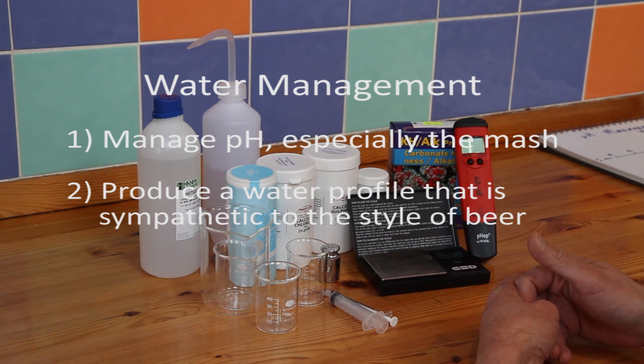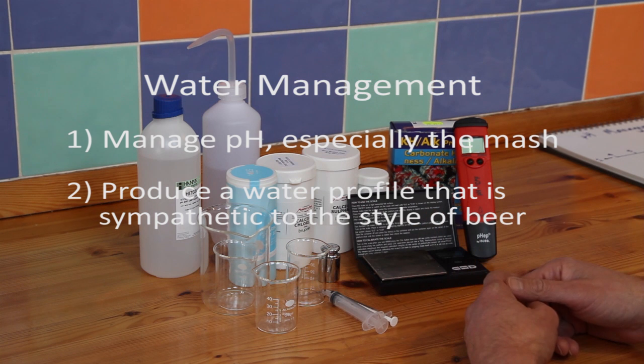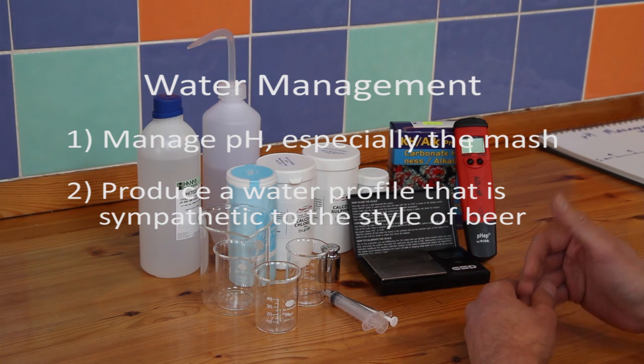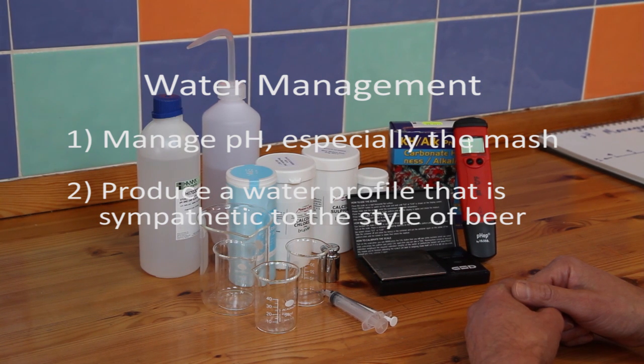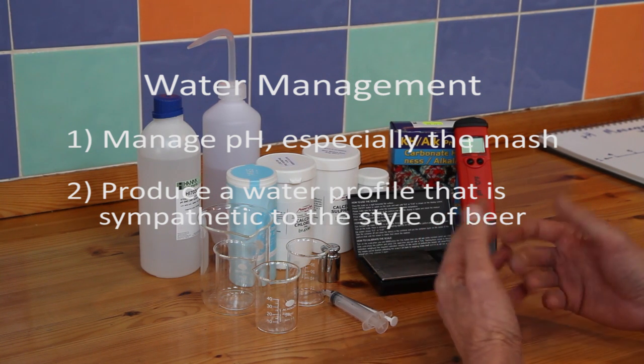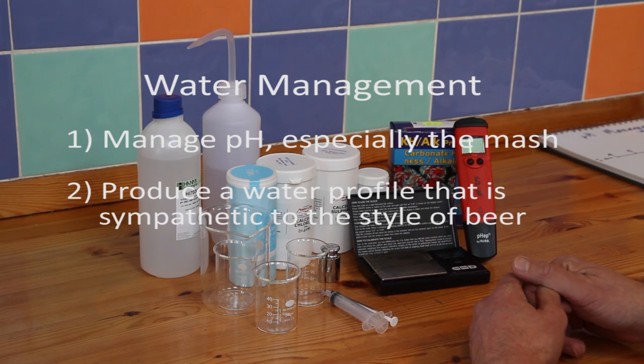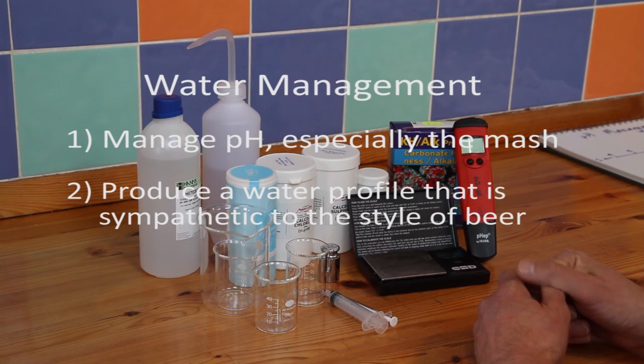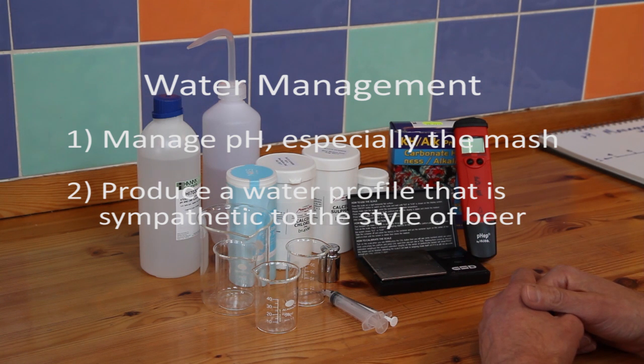So as you'll see when we get into it, the type of water profile you would build for a beer that you want to be quite malt forward and smooth and soft will be different to the water profile you will build for a beer that you want to be drier, hoppier, sharper, a bit more astringent. So we'll take in those two parts, we'll deal with pH first and then we'll talk, mainly when I'm in brewing water, we'll talk about matching your water profile to the style of beer that you are trying to produce.